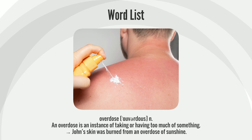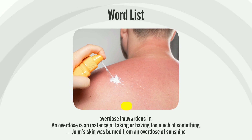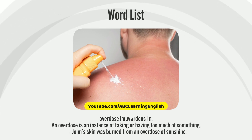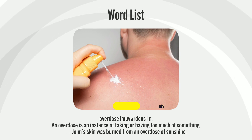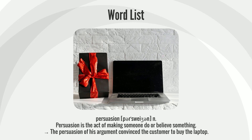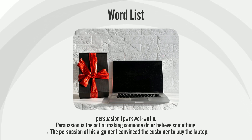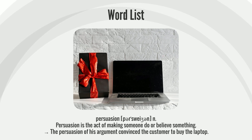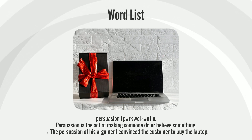Overdose: An overdose is an instance of taking or having too much of something. John's skin was burned from an overdose of sunshine. Persuasion: Persuasion is the act of making someone do or believe something. The persuasion of his argument convinced the customer to buy the laptop.